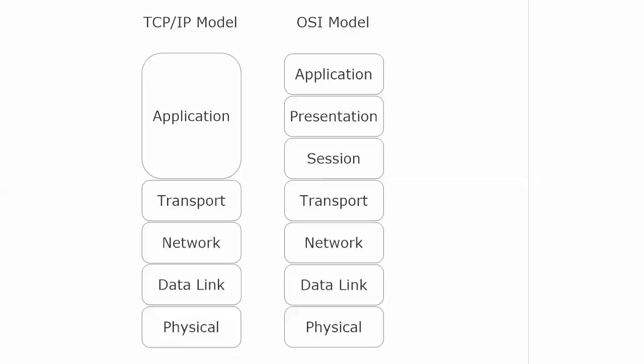You can see the bottom four layers of each model — physical, data link, network, and transport — map directly to their same-name counterpart in the other model. That is easy exam points. Watch the top one, because in the TCP/IP model you have the application layer, which maps to the session, presentation, and application layers in the OSI model.